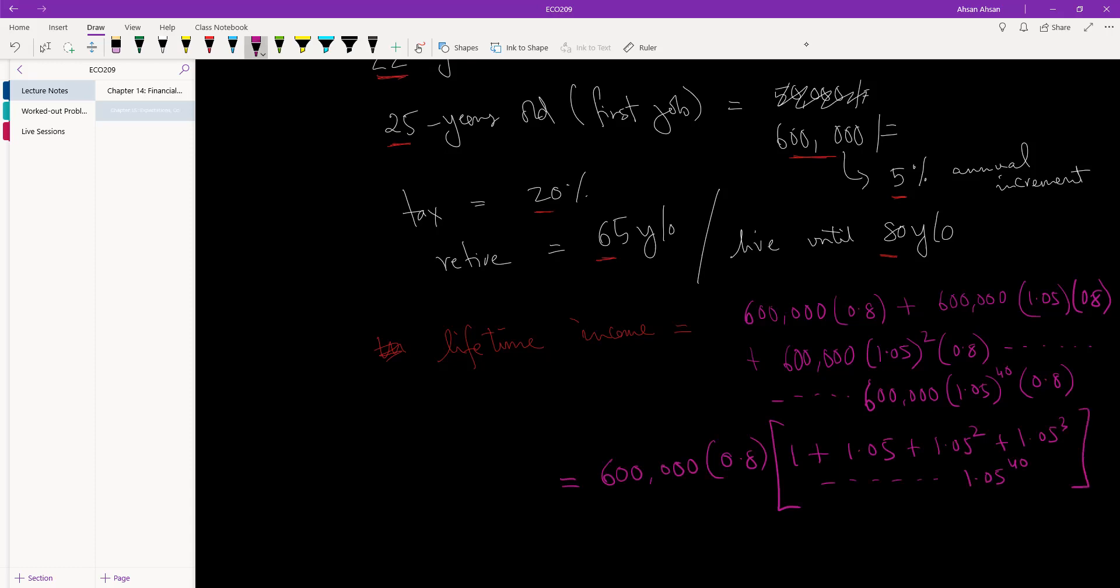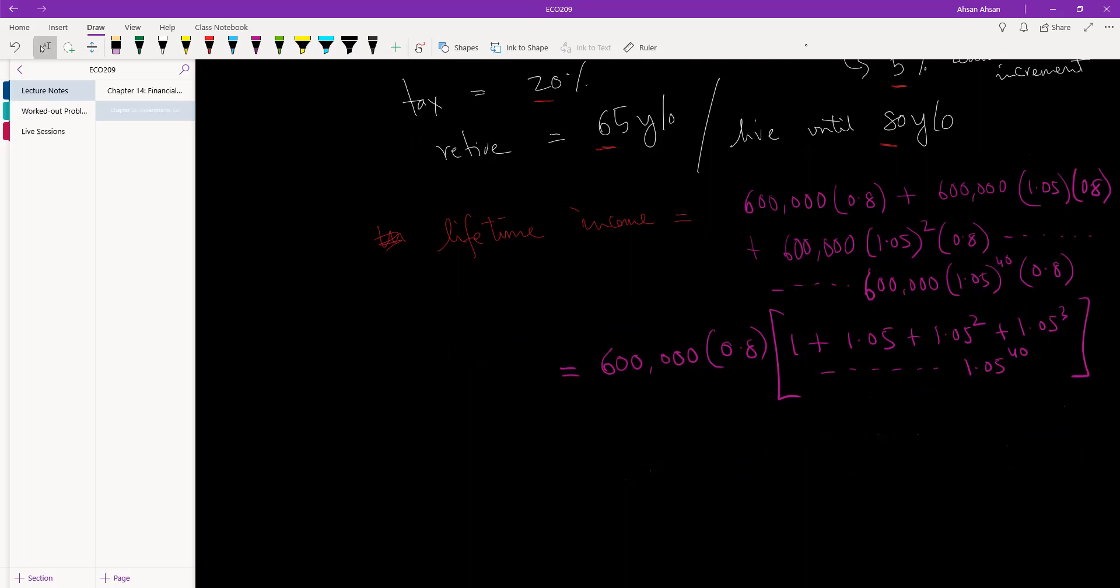so on, until we get 1.05 to the power of 40, right? Just basic, so outside, so outside, 600,000 times 80, we have 480,000. On the inside, if you notice, we have a geometric series.